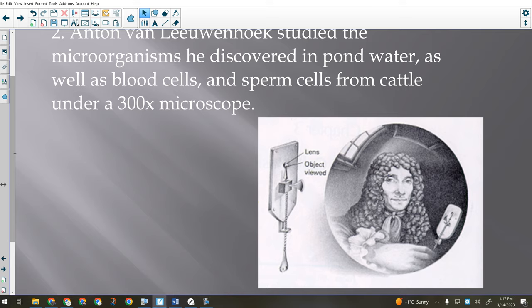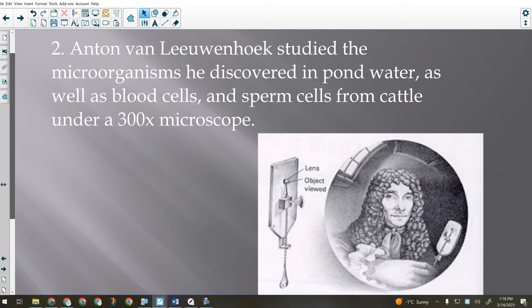Leeuwenhoek was a biologist as well, so he was looking at living cells: blood cells, things in pond water, sperm cells from a bull. He realized cells aren't empty — Hooke was wrong to call them empty little rooms. There's lots of stuff in there, and they reproduced: they split in half. He observed all of that. So Leeuwenhoek is also important. In science we only use last names, so: Hooke and Leeuwenhoek.